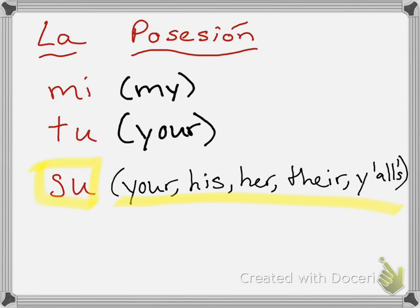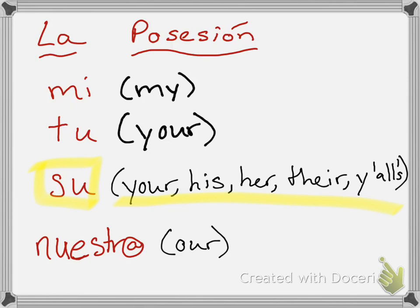And then the last one we're going to talk about today is 'nuestro,' which can also be 'nuestra.' Nuestro or nuestra is how we say 'our.' Like nuestra familia, nuestra casa, nuestros recuerdos. So these are our possessive adjectives — los adjetivos de posesión.